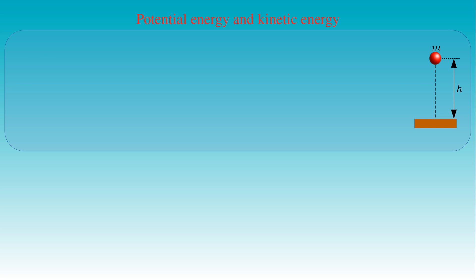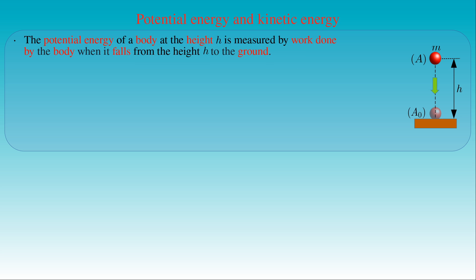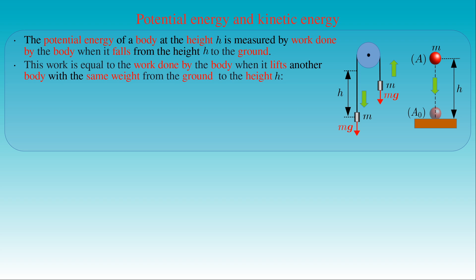If a body of mass M at the height H above ground is at rest, we can say that the body is in a state A. Here we choose the state where the body is at rest on the ground as its reference state A0. Then we measure the potential energy of the body at height H — that is, in state A — by the work done when it falls from height H to the ground, entering the reference state A0 from its initial state A. When a body descends from height H to the ground, it can lift another body attached to it with a string passing through a fixed pulley of negligible mass, provided the other body has the same weight and the bodies were set in motion by a slight push. Therefore, the body does work by lifting the other body from the ground to height H, that is bringing it from state A0 to state A. This work is given by the mass M times the magnitude of gravitational acceleration G times the height H, which is called the potential energy of the body.